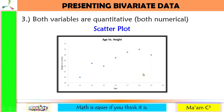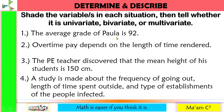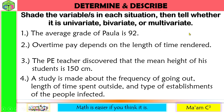For the meantime, let's have an activity called Determine and Describe. Shade the variable or variables in each situation, then tell whether it is univariate, bivariate, or multivariate.